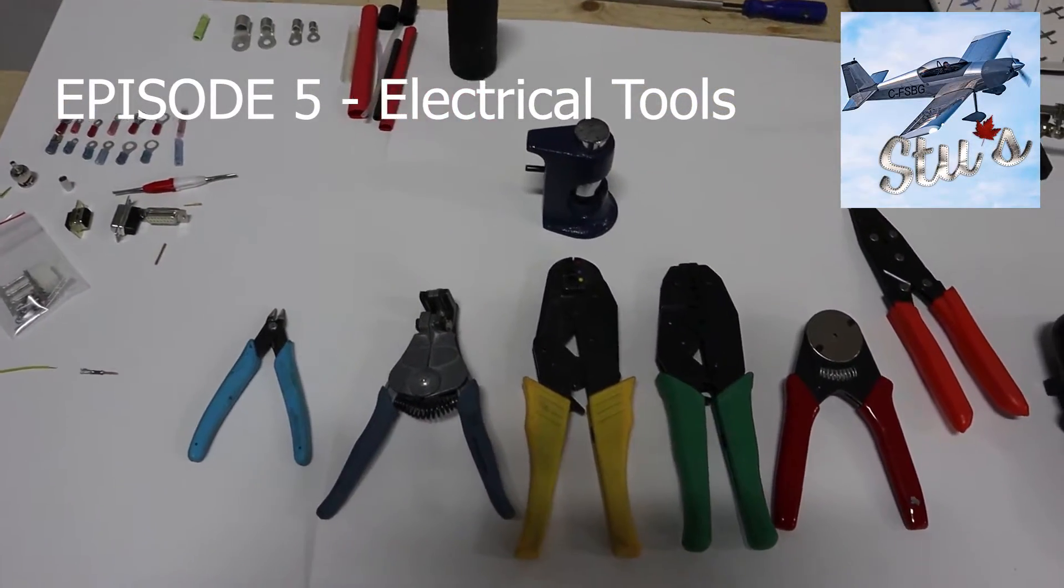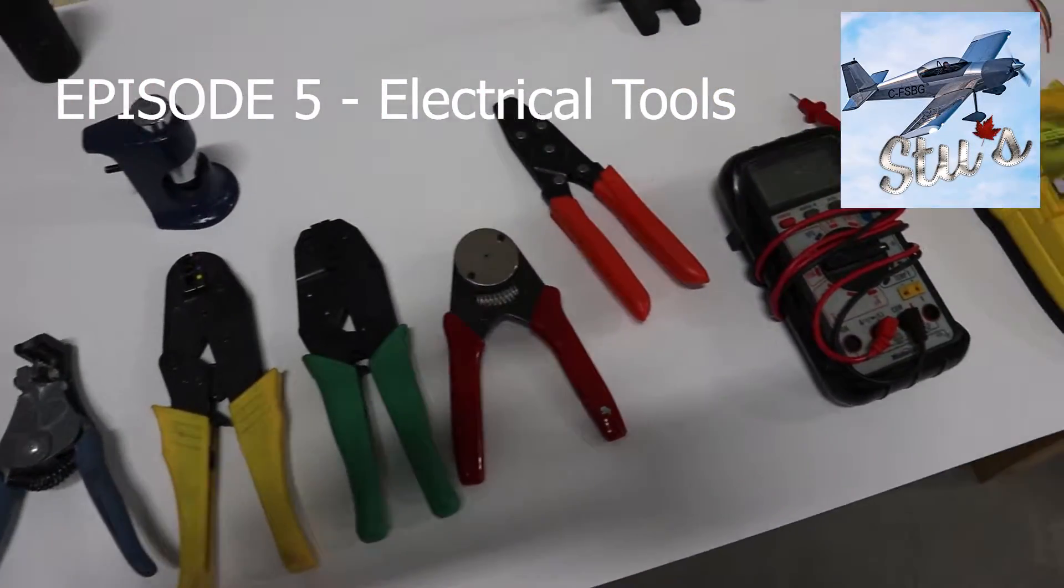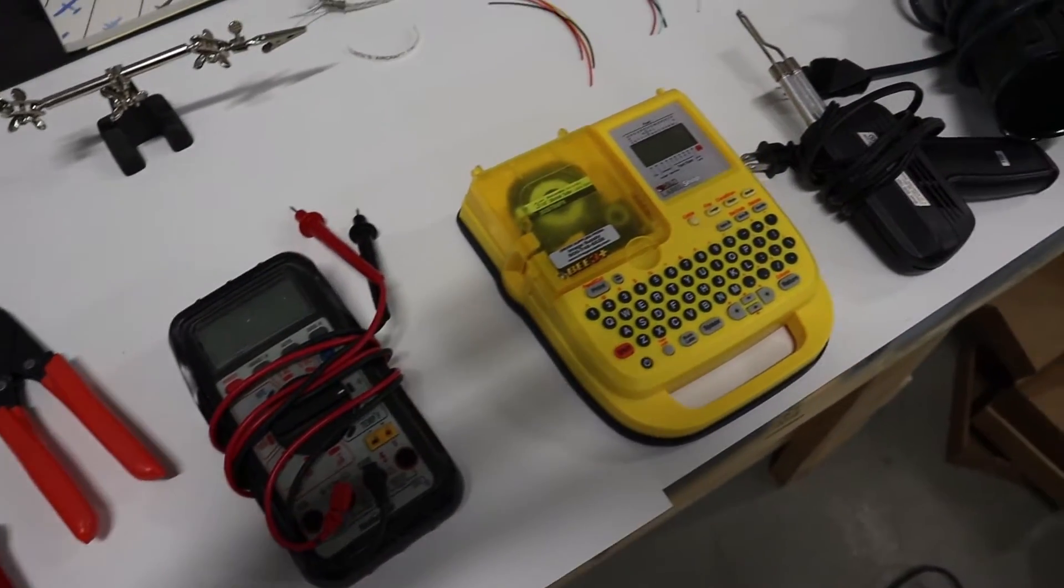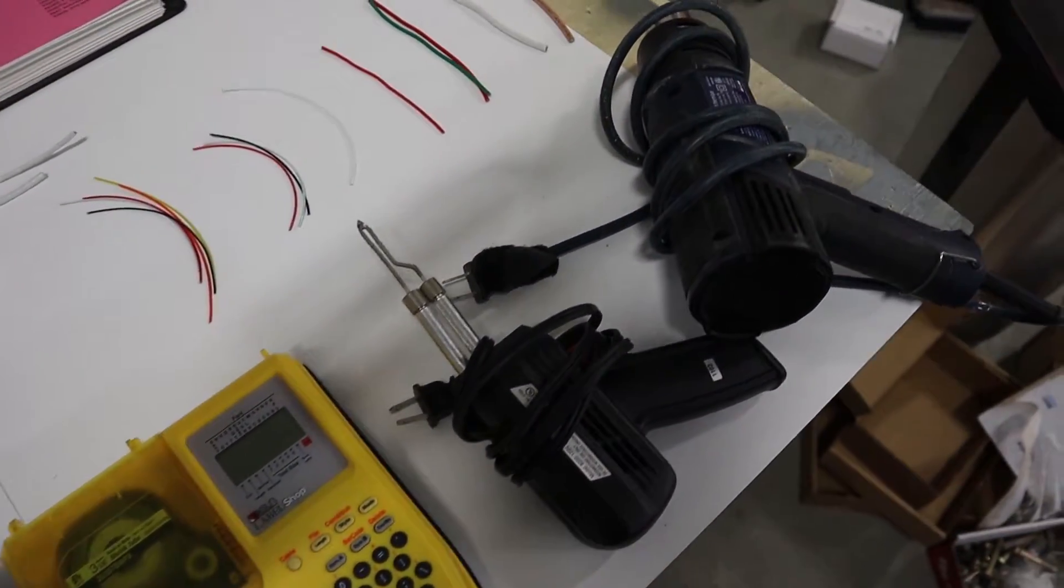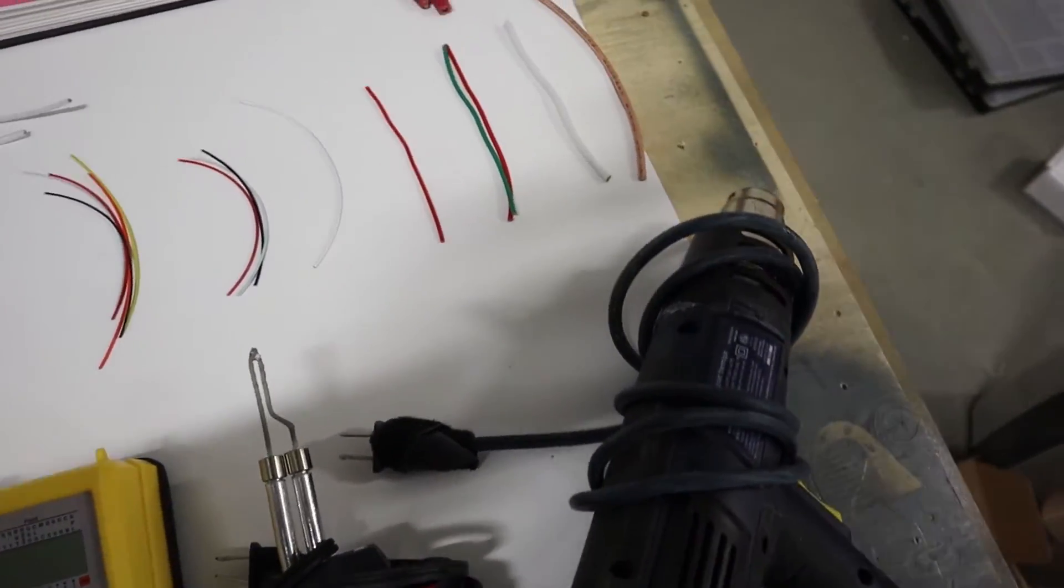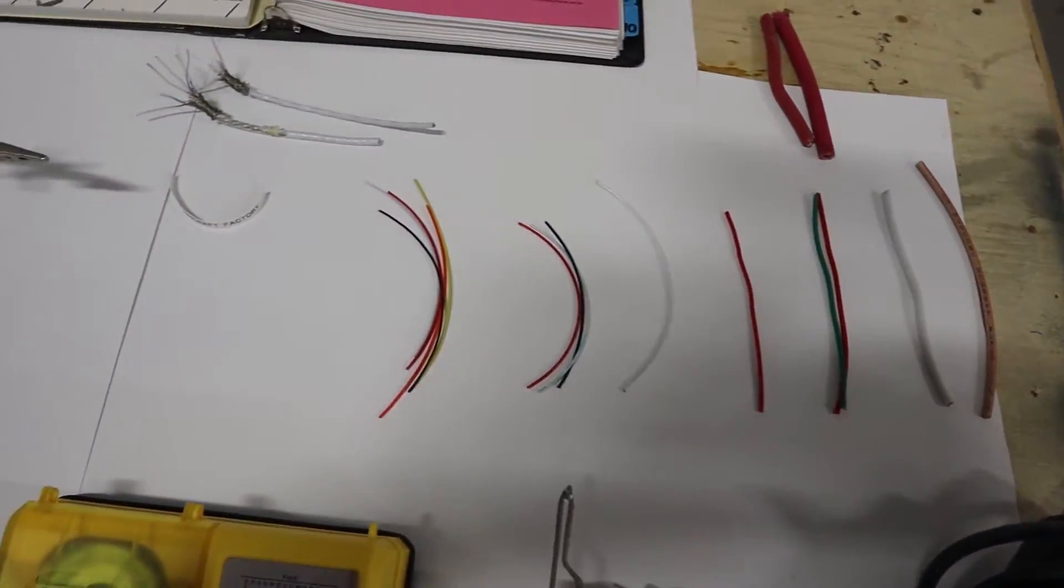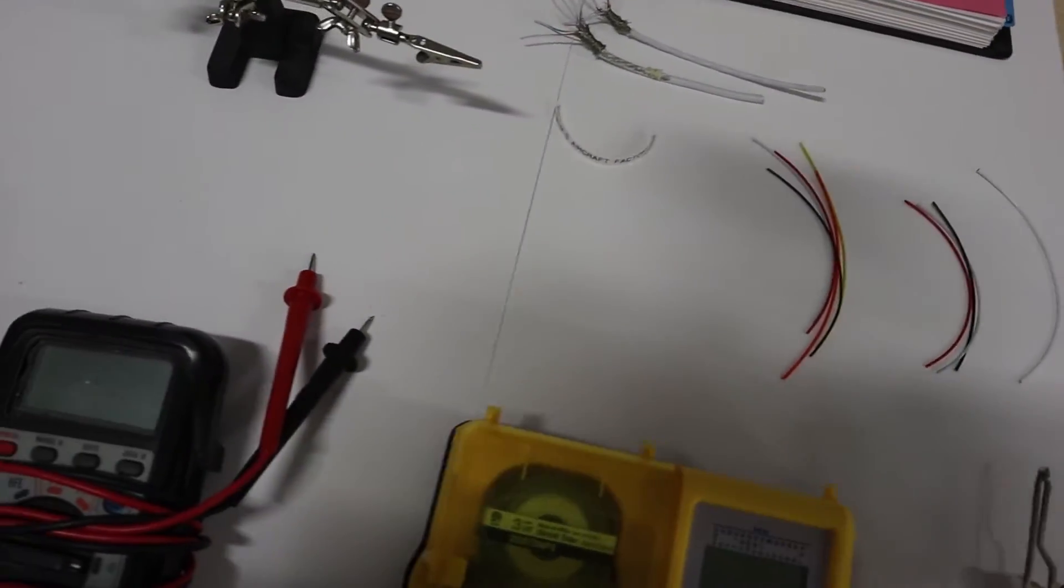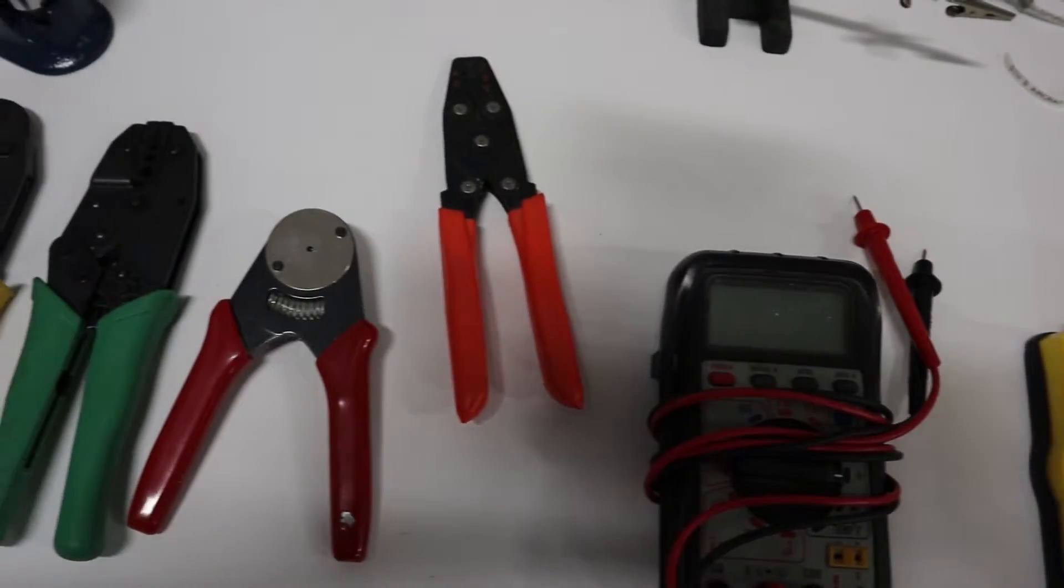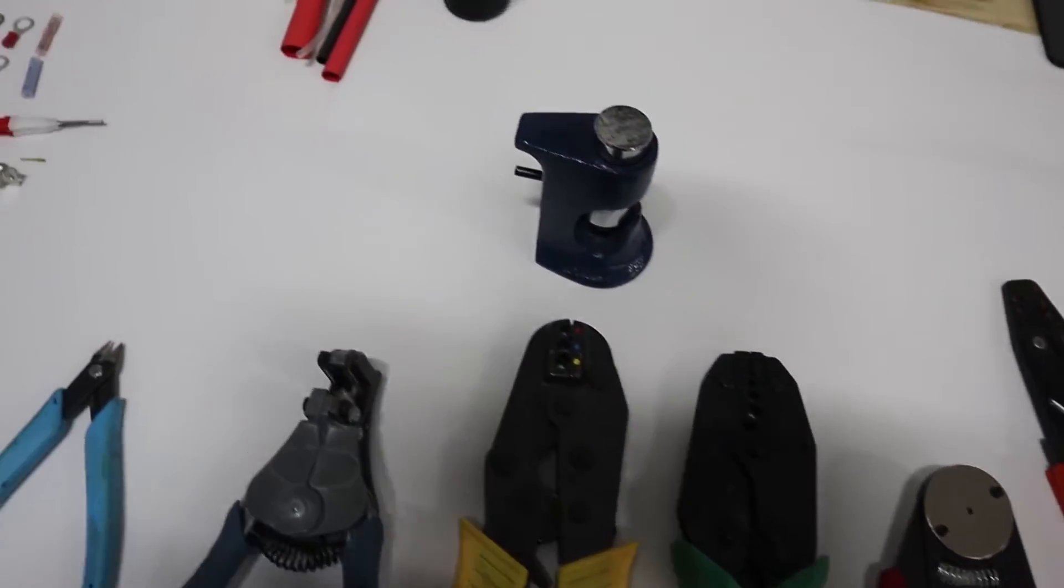Okay, as promised we'll talk about electrical tools next: cutters, strippers, and crimpers, the various tools that you're going to need when putting an electrical system in your aircraft. We'll talk about the wire and the connectors as well as we get into the installation of the G3X system on the RV-4.